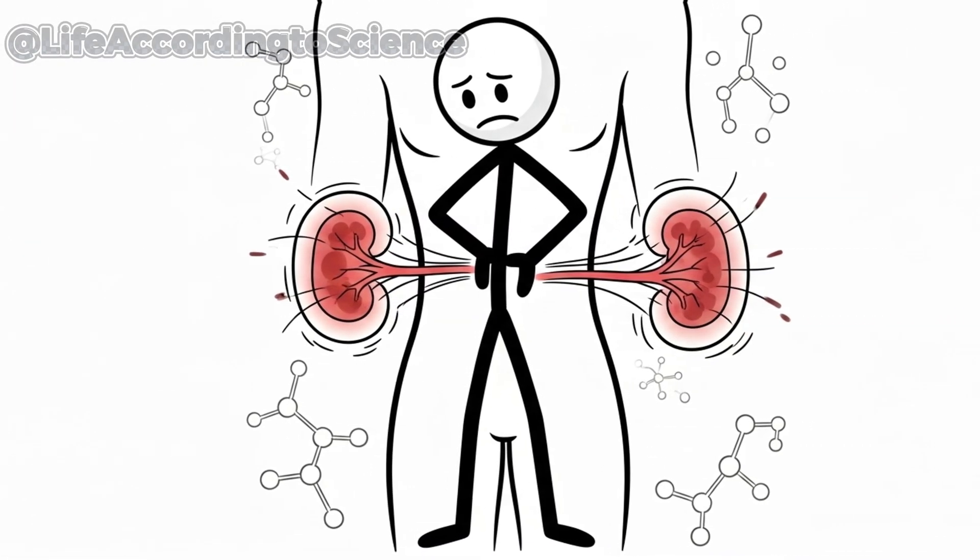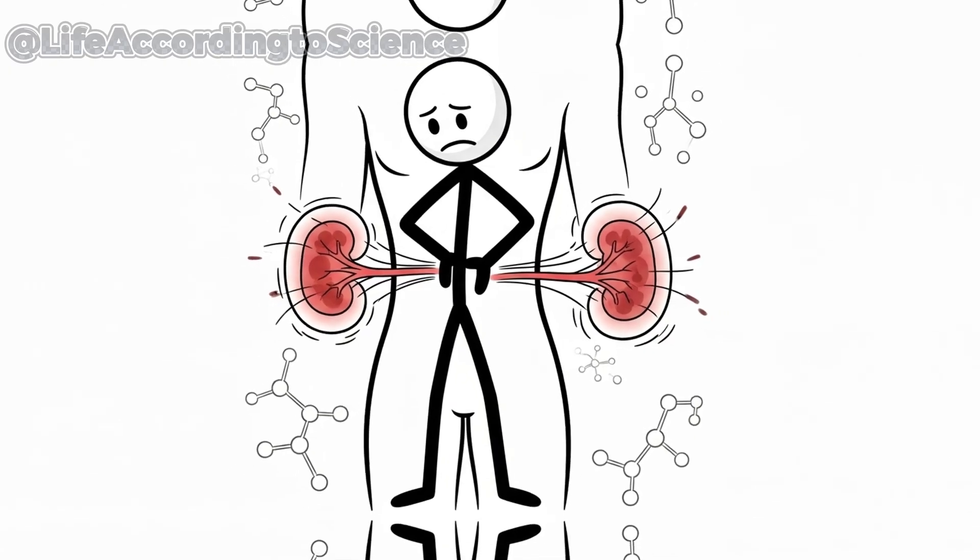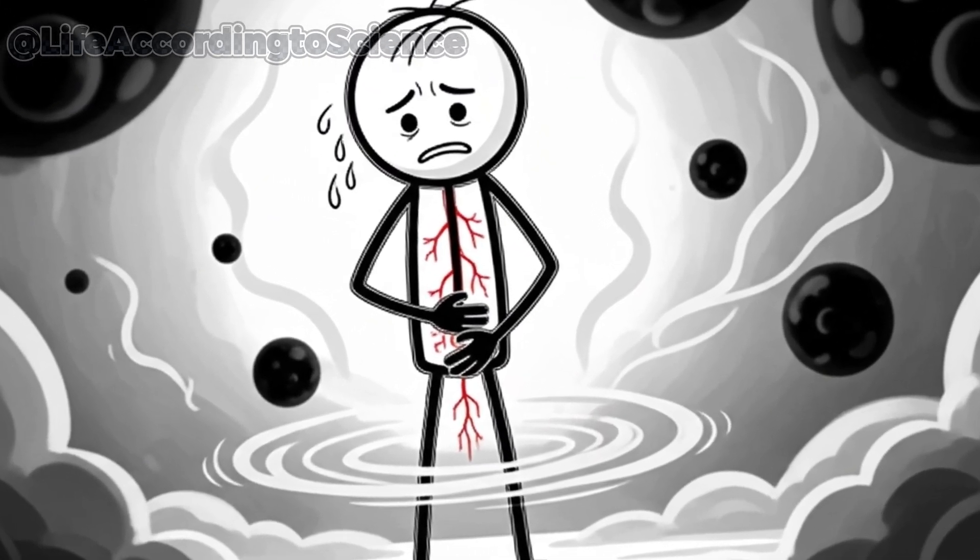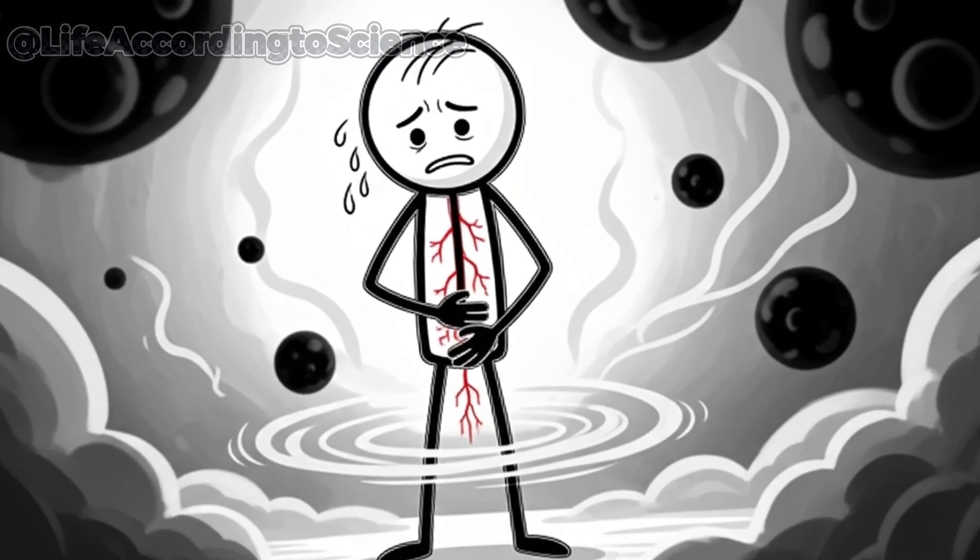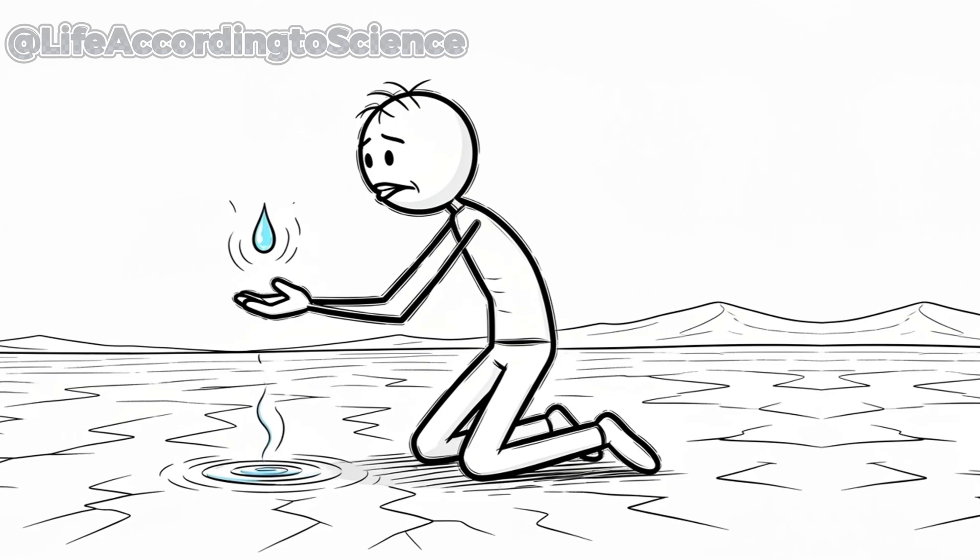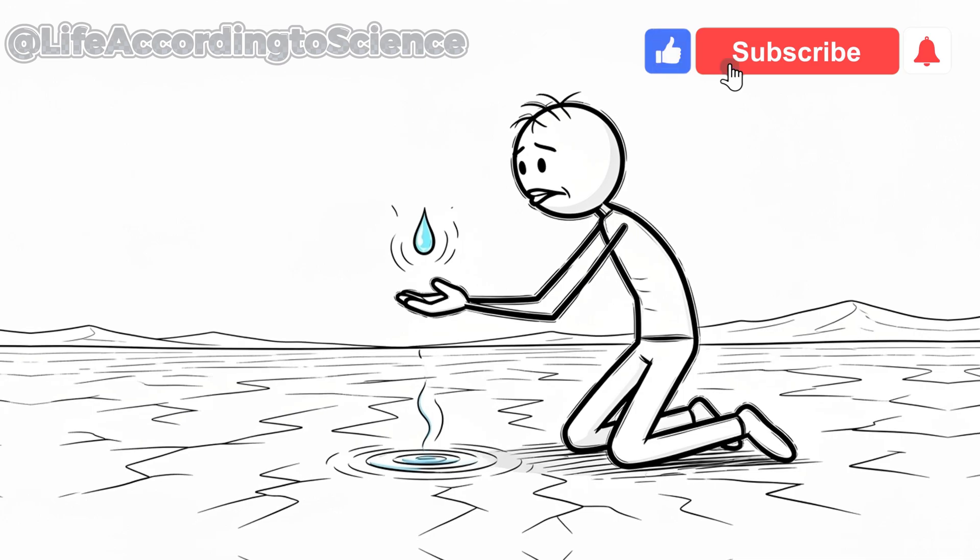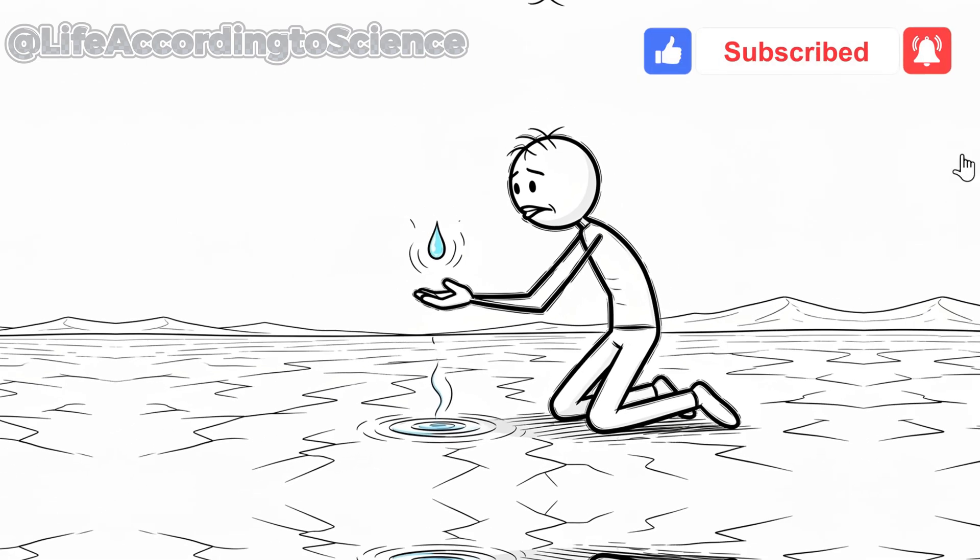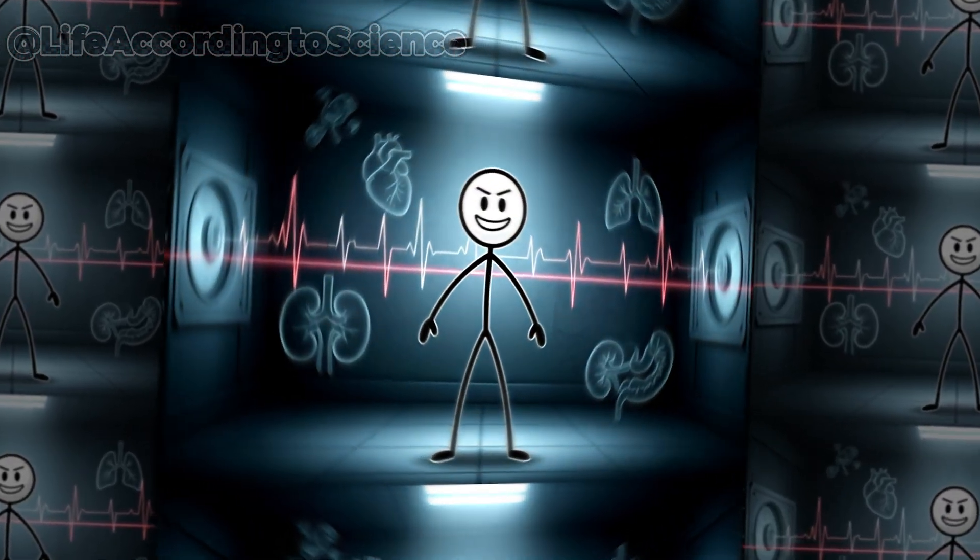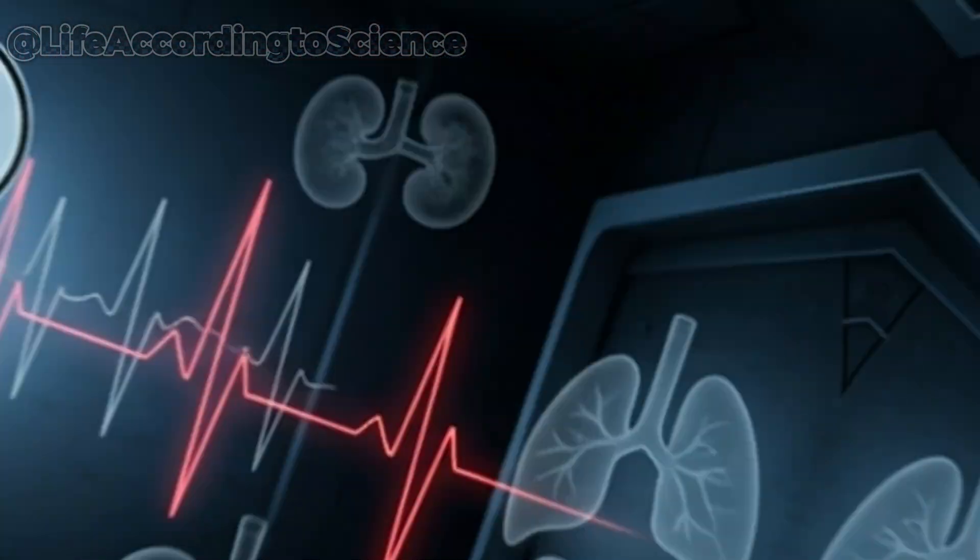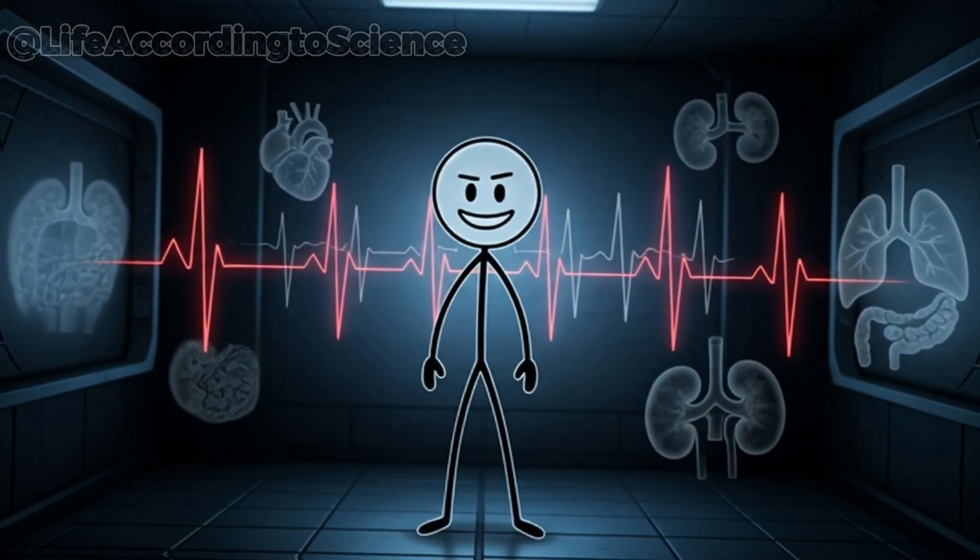Internally, your kidneys reach a breaking point. They cannot properly filter waste without enough fluid. Urea and toxins accumulate in your bloodstream, making you feel nauseated, dizzy, and weak. It's a toxic cycle—the less water you have, the more poisoned your body becomes. At this stage, even a small sip of water could bring immense relief. But for someone who continues the experiment, every hour pushes them closer to irreversible organ failure. The blood, once the river of life, is now turning into a slow, deadly current.